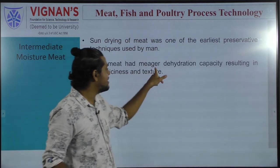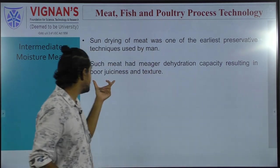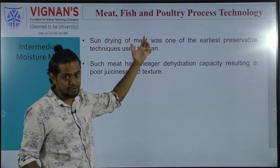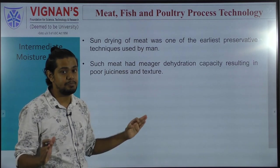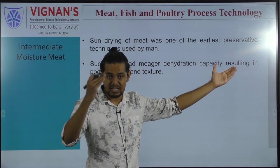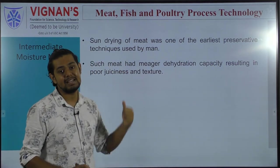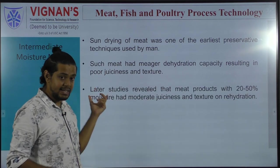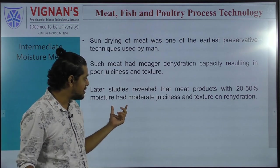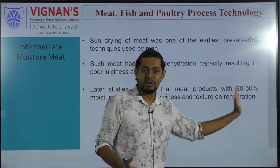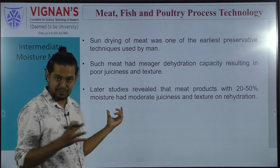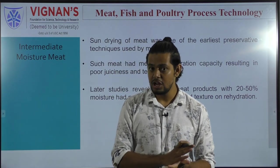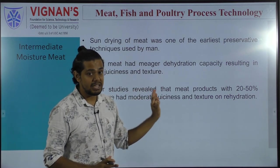Sun-dried meat had poor dehydration capacity resulting in poor juiciness as well as texture. To overcome this problem, studies found that when a moisture content of anywhere between 20 to 50 percent is maintained and the meat is rehydrated after drying, the juiciness and texture of the meat will be retained or regained after rehydration. This is the concept of intermediate moisture meat.